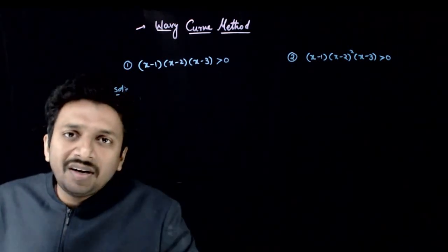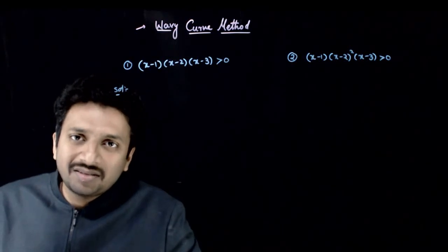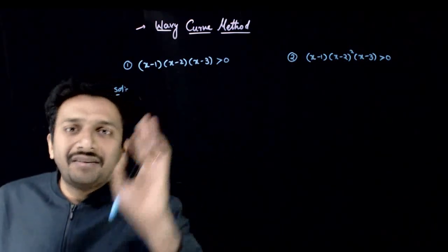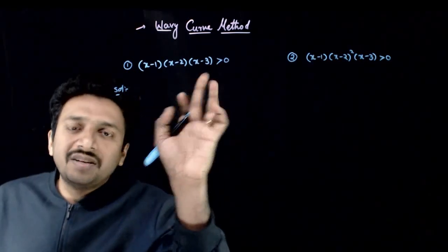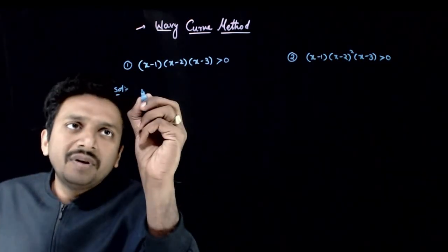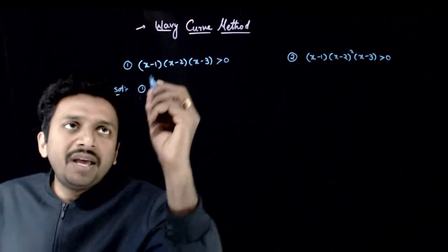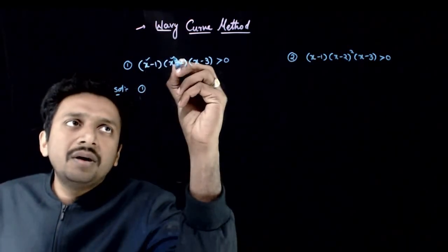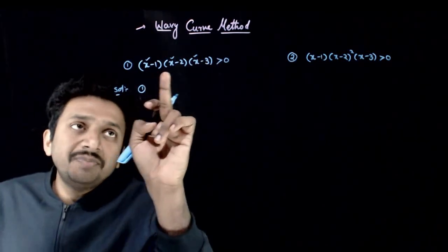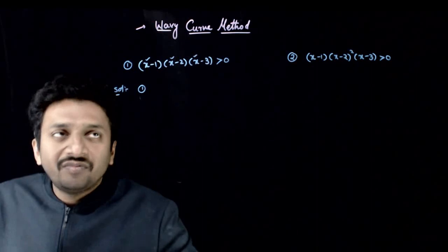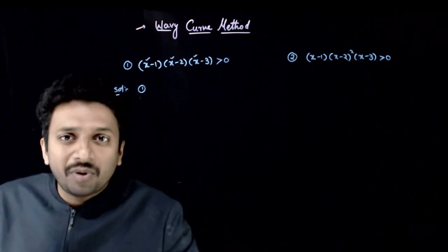As you see these questions, do they come under the topic of factorized inequalities? Yes, because they are already factorized and given to you. So, x minus 1 into x minus 2 into x minus 3 greater than 0. The first step of the wavy curve method is to make all the leading coefficients in each factor positive, which has been already done because all the leading coefficients are plus 1, all are positive.